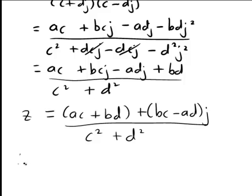And you also sometimes might want to write this by completely breaking up the real and imaginary parts to get ac plus bd here, divided by c squared plus d squared.